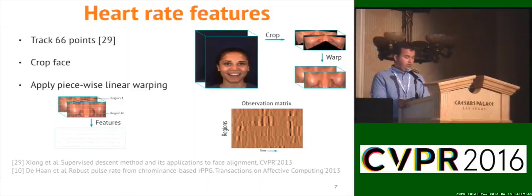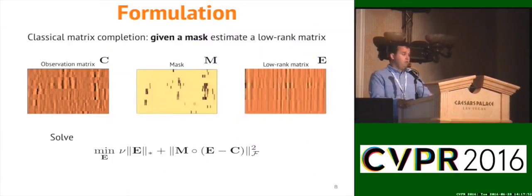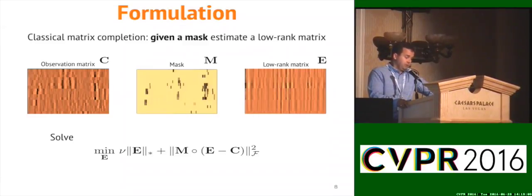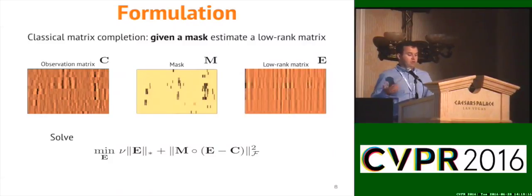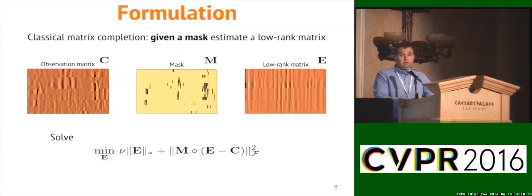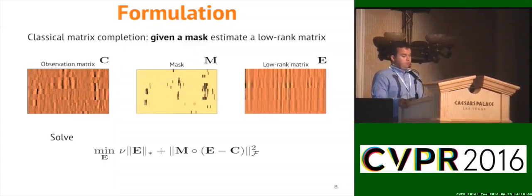Since we use matrix completion in this work, I want to give a brief overview of the classical matrix completion formulation. The idea is that having an observation matrix and a mask, we want to estimate a low-rank matrix that contains all the values absent in the observation matrix — values defined by the mask. Empty values in the mask are either unknown or noisy and we want to get rid of them. People usually do this by minimizing a cost involving the nuclear norm with the mask element-wise multiplied into the expression, selecting only the pixels we believe in. But in the classical approach, the mask is fixed and must be defined beforehand.